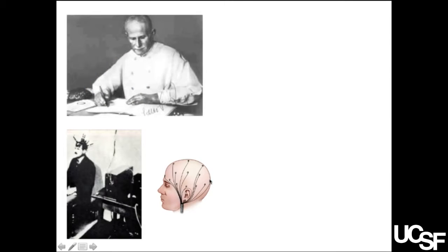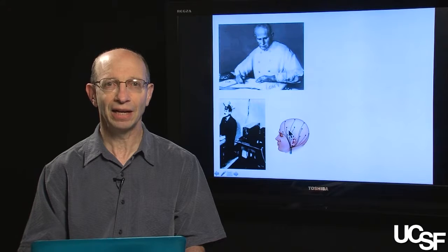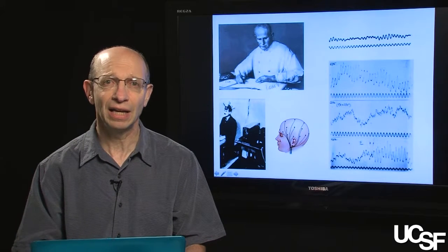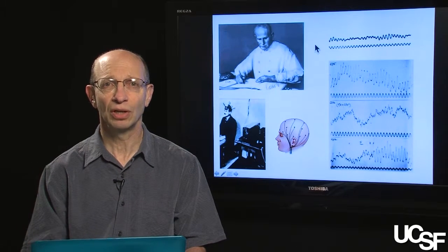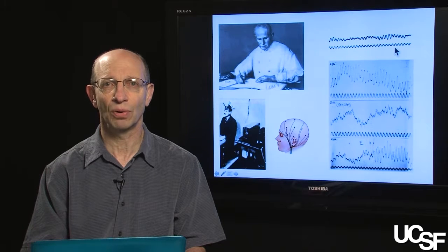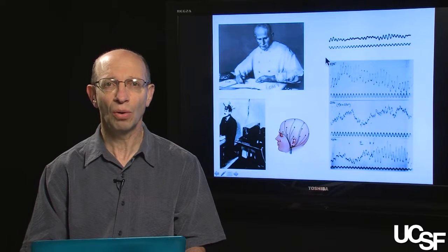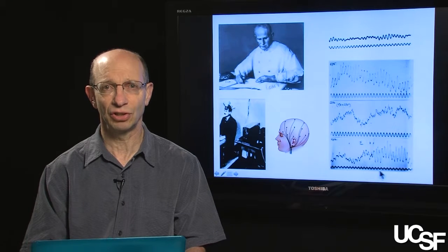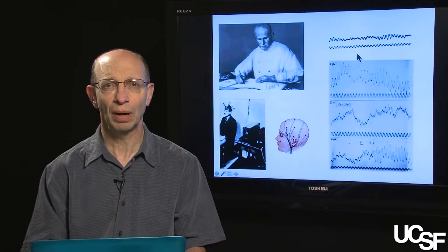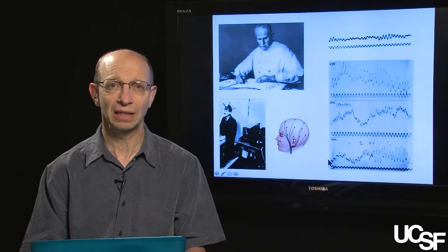Now this is a more modern rendition of the EEG showing where electrodes are placed. And here on the right side of the slide is the actual first human EEG ever recorded, these two top traces. And below are subsequent EEG traces that Dr. Berger published in manuscripts in the 1920s.